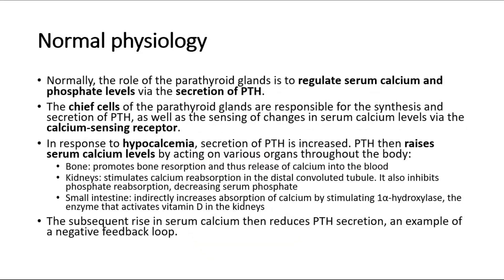Normally, the role of the parathyroid glands is to regulate serum calcium and phosphate levels via the secretion of PTH. The chief cells of the parathyroid glands are responsible for the synthesis and secretion of PTH, as well as the sensing of changes in serum calcium levels via the calcium-sensing receptor. In response to hypocalcemia, secretion of PTH is increased.